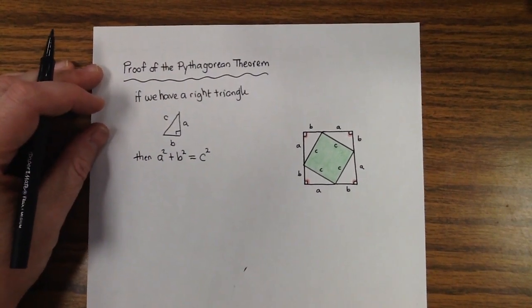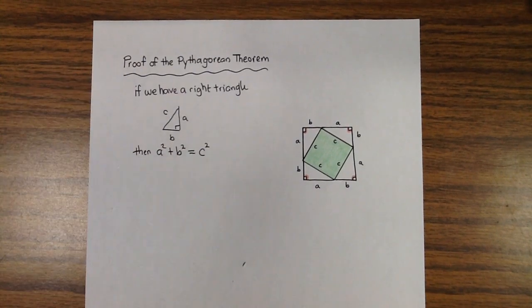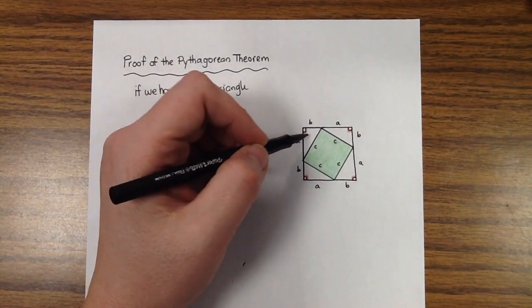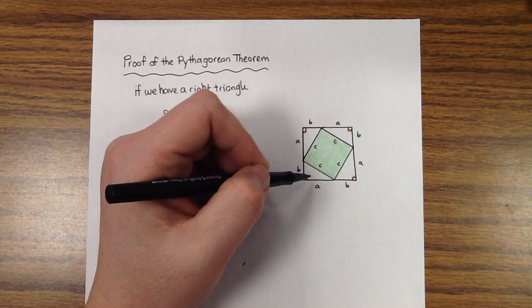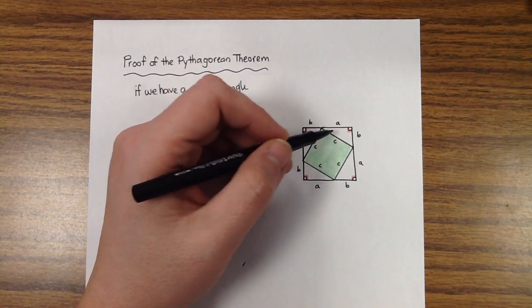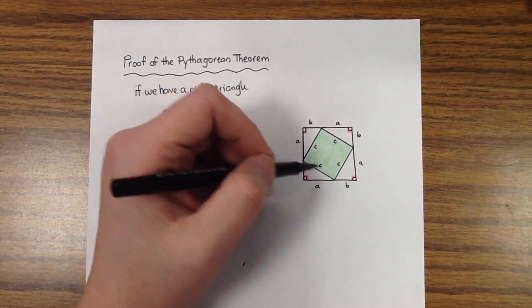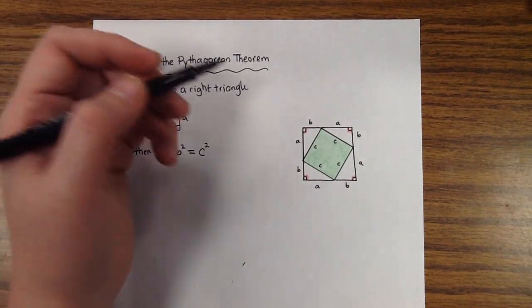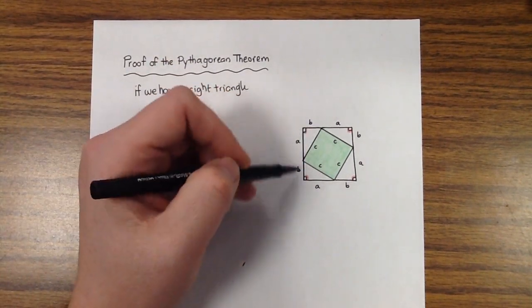So the method that we're going to use today is we're going to copy this right triangle four times, so that when we connect them like this, it creates a square in the center. And we're going to use the argument of area.